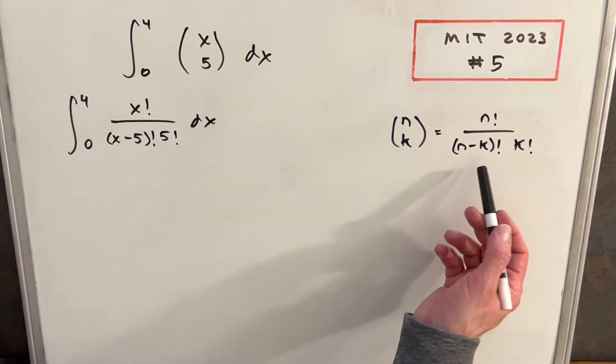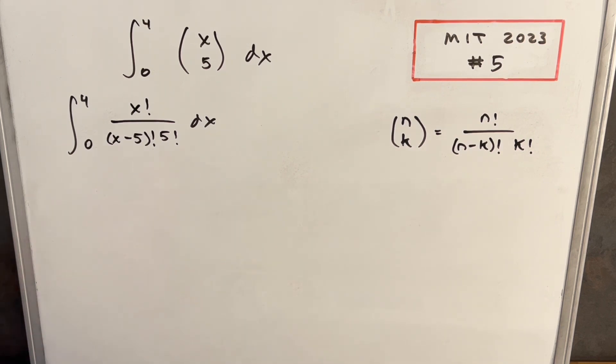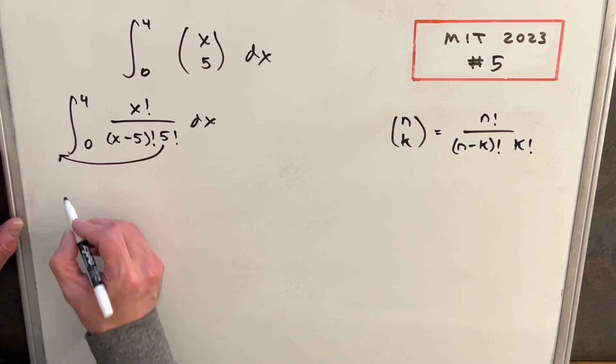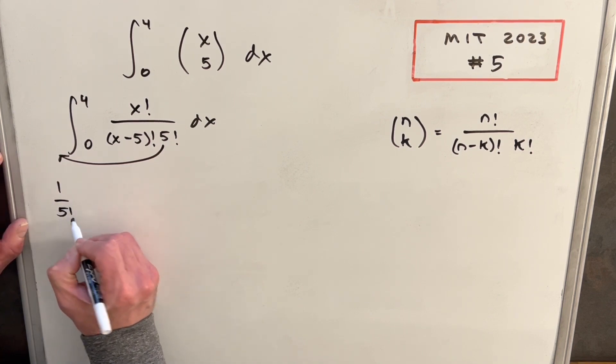Okay, so now I have that in this form over here, just writing this in terms of factorials. I can take this five factorial, it's a constant, so I can bring this up front and rewrite my integral with it out here.